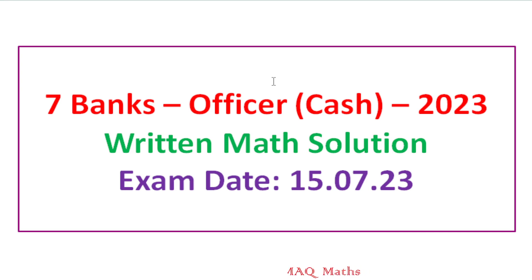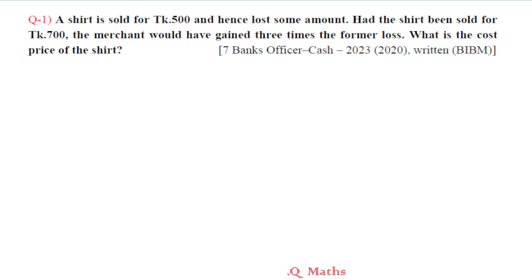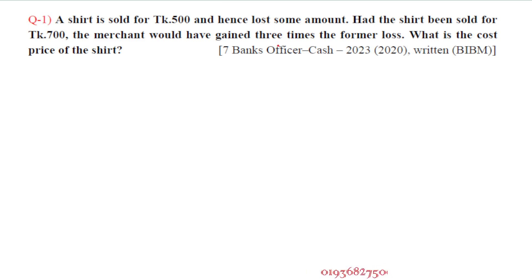Question number 1: A shirt is sold for taka 500 and hence lost some amount. Had the shirt been sold for taka 700, the merchant would have gained three times the former loss. What is the cost price of the shirt?